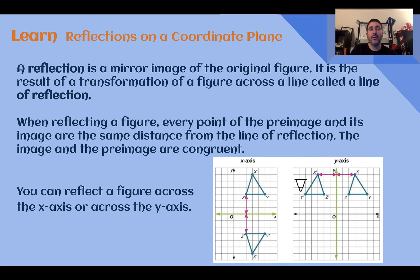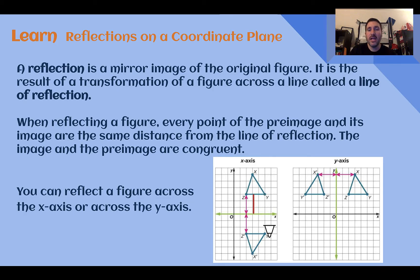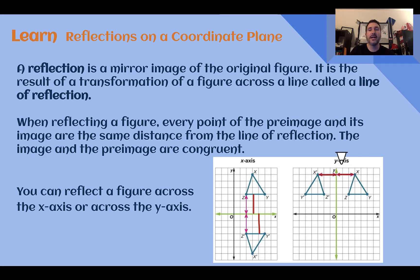When we're reflecting, every point on the pre-image and the image are the same distance from the line of reflection. And just like with translations, the image and pre-image of a reflection are congruent. There are many different things we can reflect over, and the important thing to remember is that they are the same distance from that line of reflection.